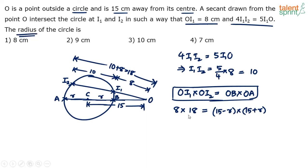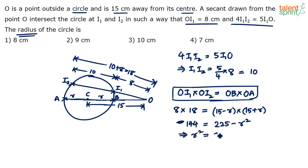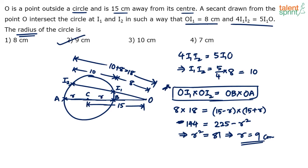8 times 18 is 144, which equals 15² − R², that is 225 − R². So R² = 225 − 144 = 81, giving R = 9. The radius of the circle is 9 centimeters, which is option 2. The key theorem to remember is: OI1 × OI2 = OB × OA. The rest is substituting values to get the answer.